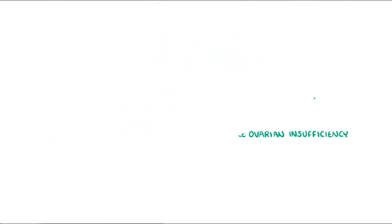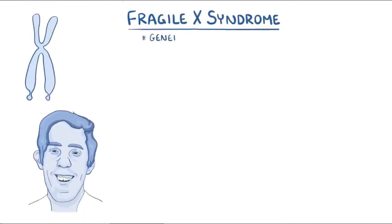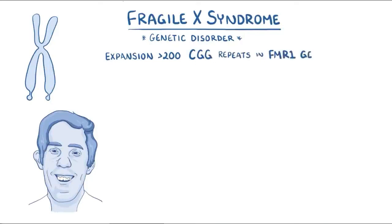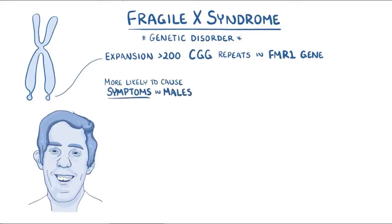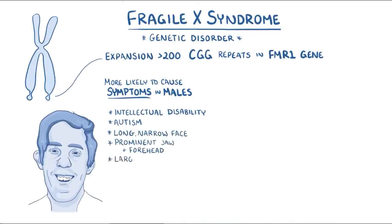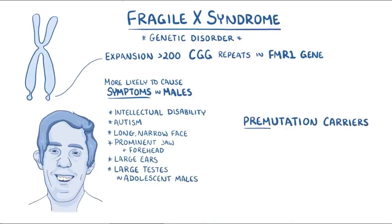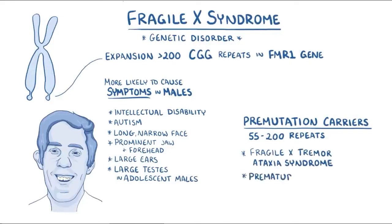As a quick recap, Fragile X syndrome is a genetic disorder caused by expansion of over 200 CGG triplet repeats in the FMR1 gene on the X chromosome. It's more likely to cause symptoms in males than females, and these symptoms include intellectual disability and autism, a long narrow face, a prominent jaw and forehead, large ears, and large testes in adolescent males. Premutation carriers who have an intermediate number of repeats can have Fragile X tremor ataxia syndrome, as well as premature ovarian failure.